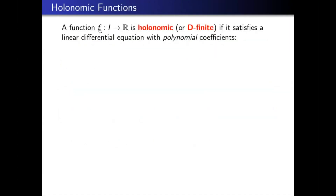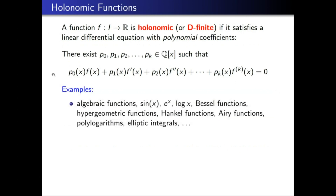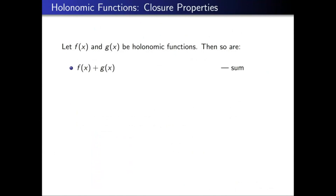Now for functions. A function f from an interval I into the reals is holonomic (or D-finite, where D stands for 'differentially finite') if it satisfies a linear differential equation with polynomial coefficients: p_0(x)f(x) + p_1(x)f'(x) + … + p_k(x)f^{(k)}(x) = 0, where the p_i are polynomials in x with rational coefficients.